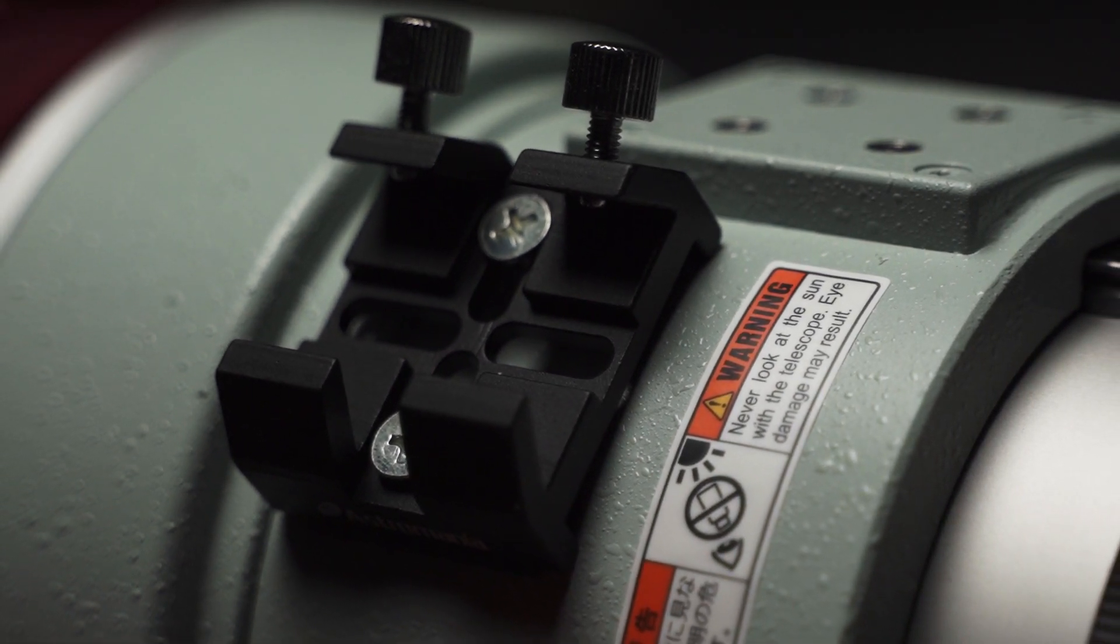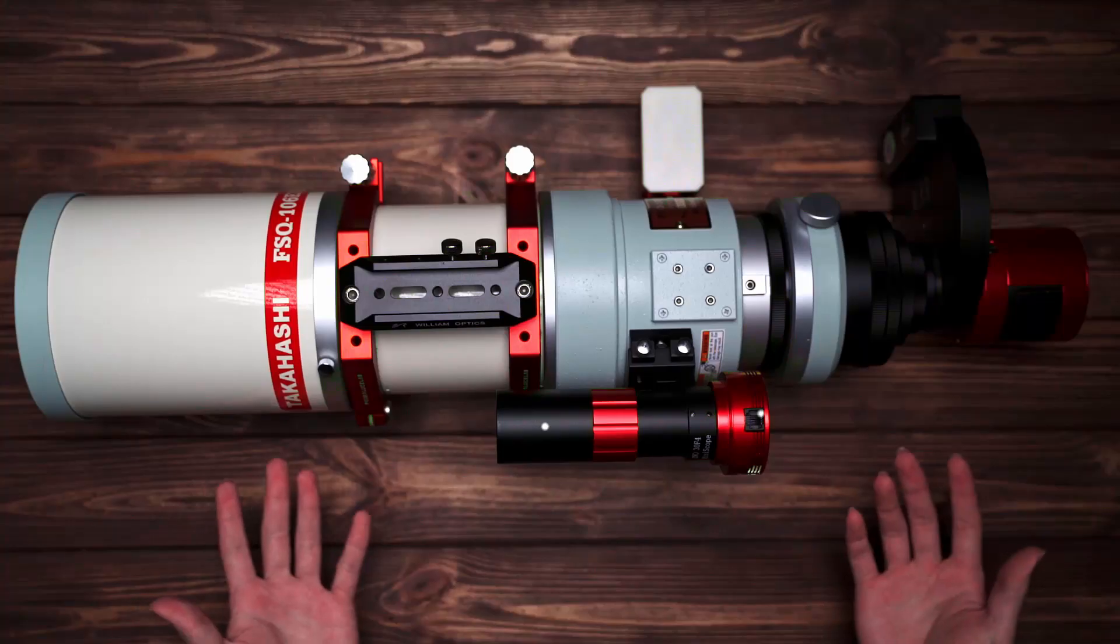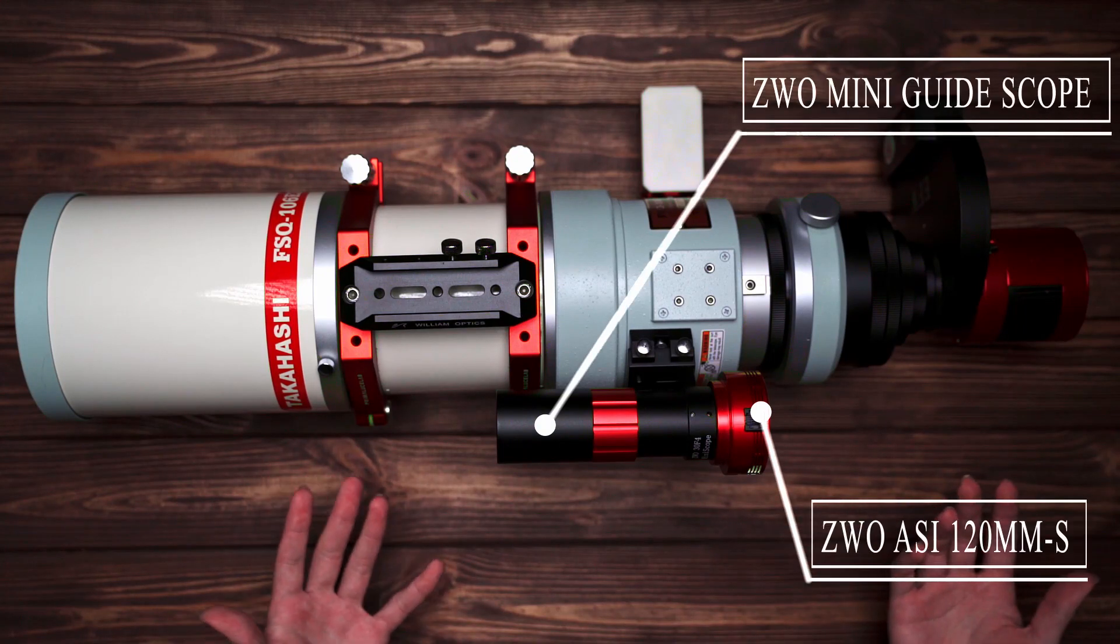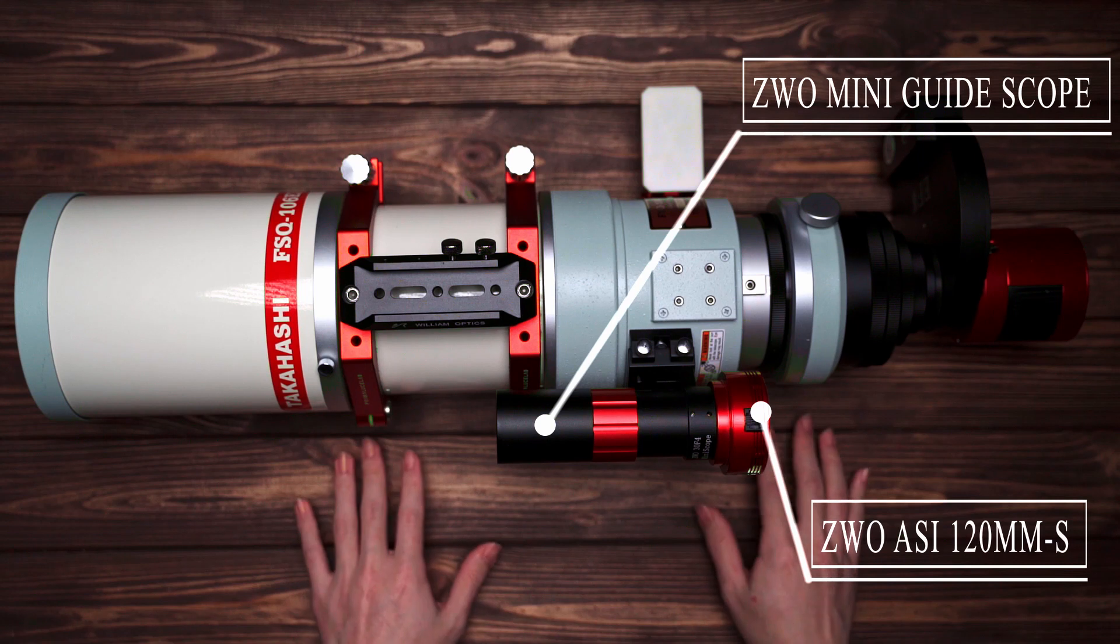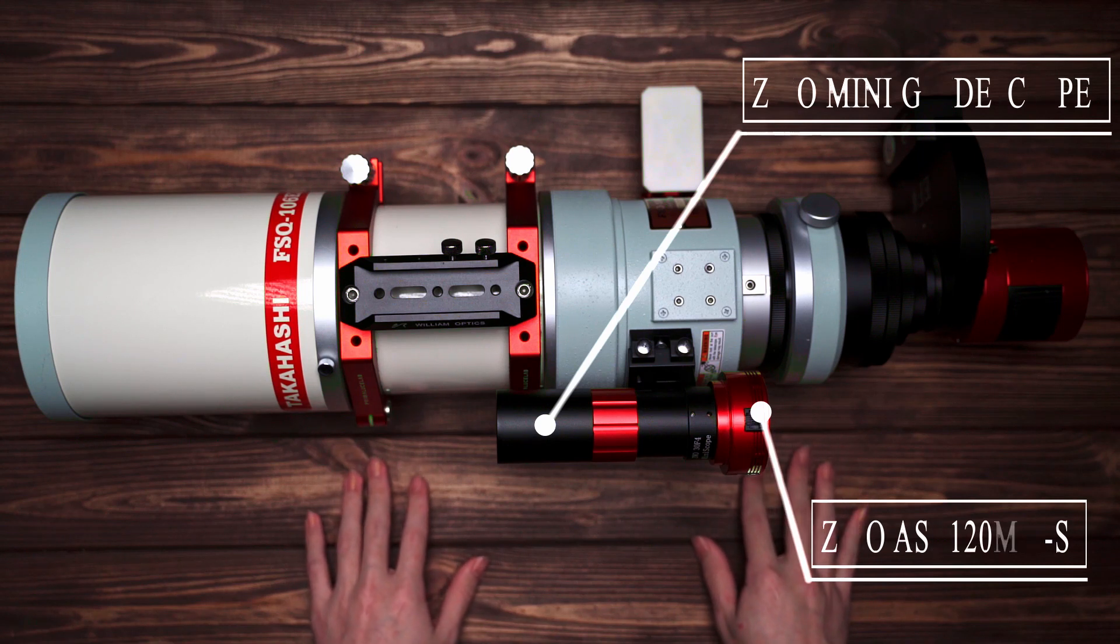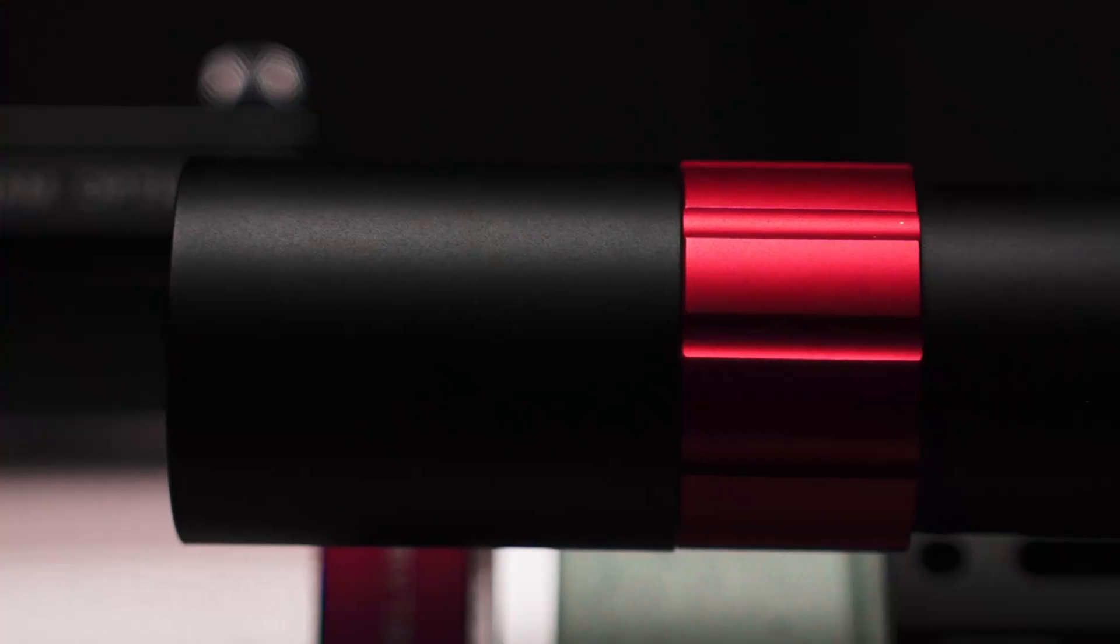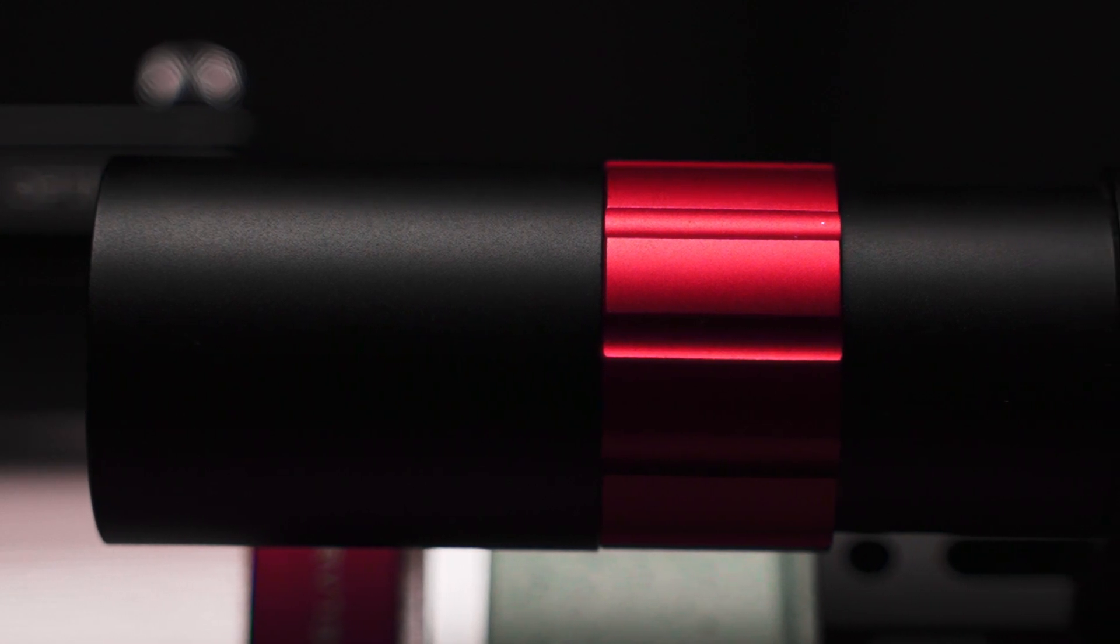I personally use ZWO Mini Guide Scope 30mm f4 and ZWO 120mm-S. Some of you might think this focal length of the guide scope is too short compared to FSQ106.